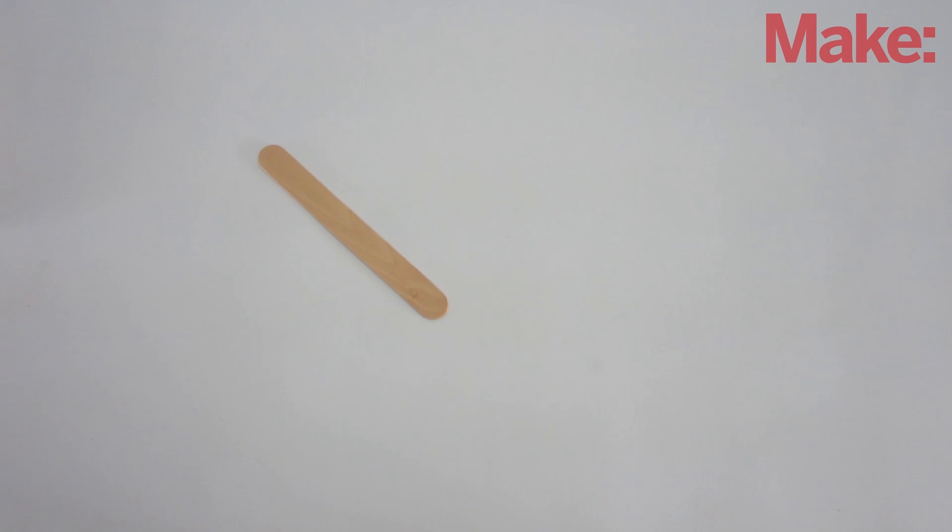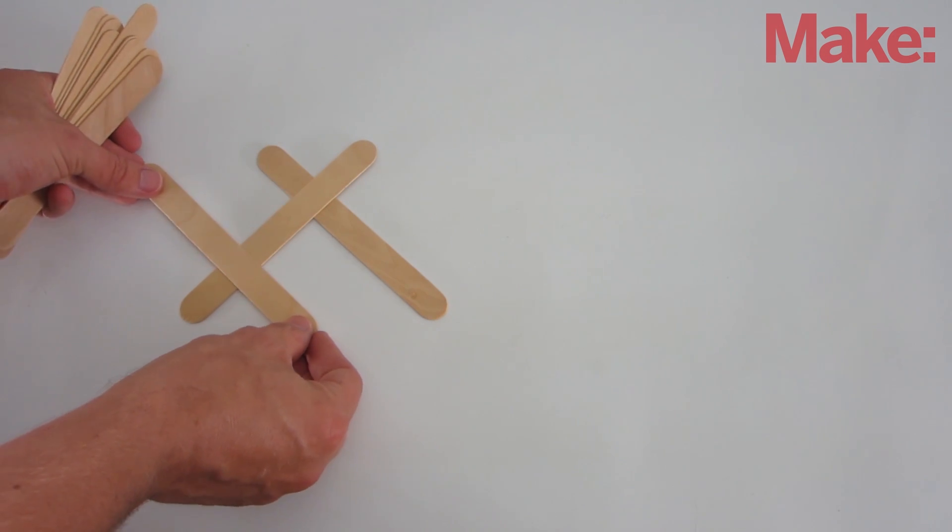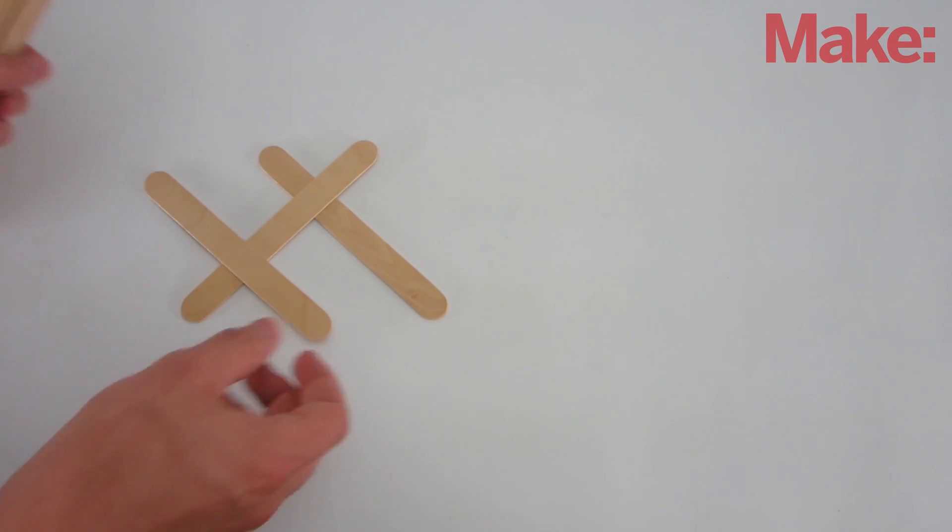To make it, start by placing one stick on the ground at a 45 degree angle. Place a second stick on top so that they intersect at the top third of each stick. Then place a third stick on top of the second so that they intersect at the bottom third of the two sticks.